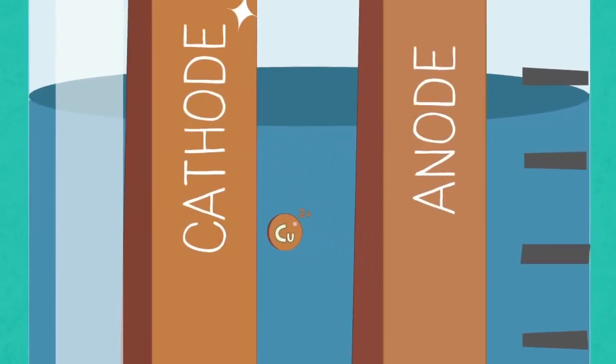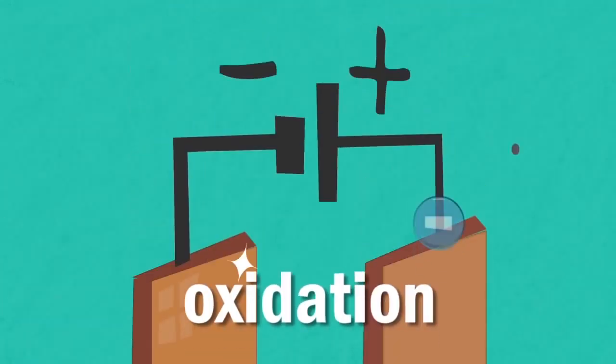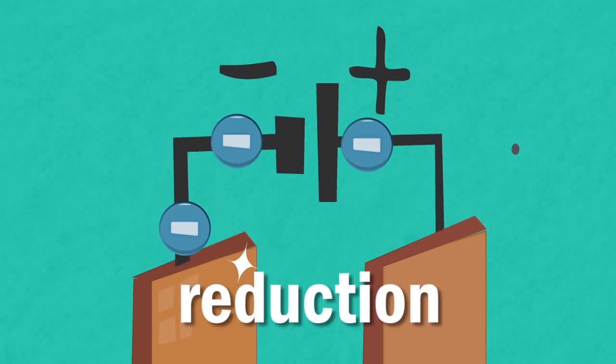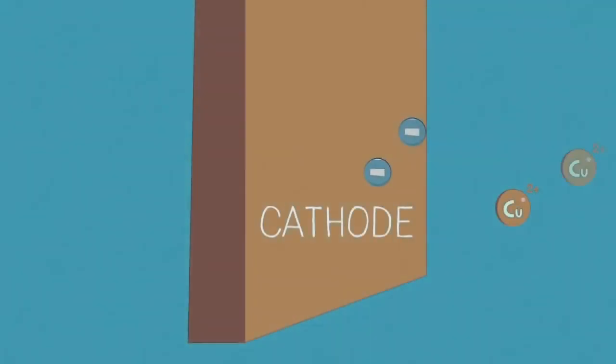Copper 2+ ions move between the anode and the cathode, allowing oxidation and reduction to occur. At the cathode, copper 2+ ions are deposited as copper as shown in the equation.